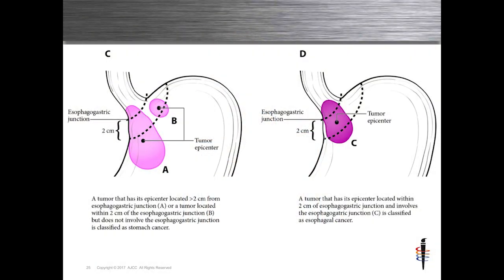This generated a lot of phone calls for me. Looking at example B: if a tumor is not touching the GE junction — even though it's within 2 centimeters of the cardia — it's staged as a gastric cancer. If a tumor is into the GE junction but the epicenter is greater than 2 centimeters, this type 3 is also staged as gastric cancer. However, anything with the epicenter within 2 centimeters of the GE junction — the classic type 2 tumor — is staged as esophageal.